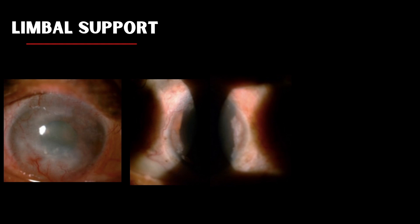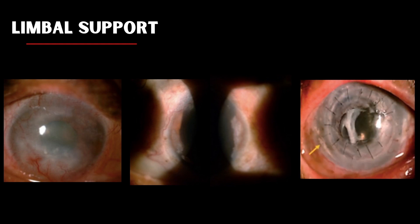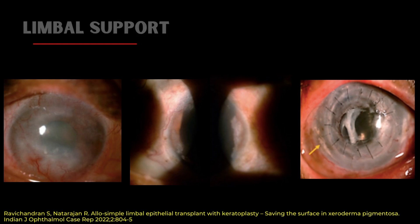Here is a patient with multiple recurrences with scar and vascularization, but if we look at the pictures in the middle, we see there is significant limbal stem cell deficiency. This is a patient with a different condition, but it is shown in the context that along with the graft, when there is significant LSCD, we could do an alloslet from the same donor when it is fresh. Since herpetic grafts are anyway high-risk grafts, the immunosuppressive cover given post-operatively will protect both grafts. We can see that the surface is well epithelialized in the post-operative period.